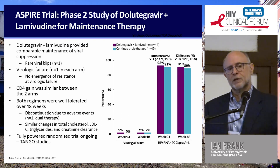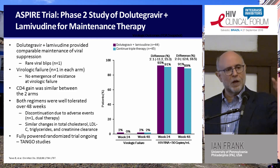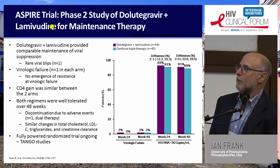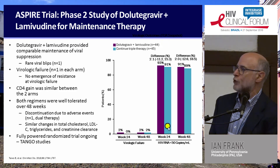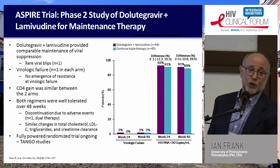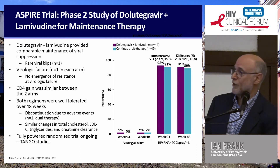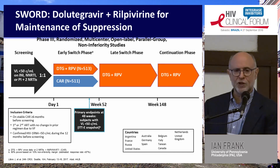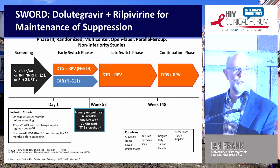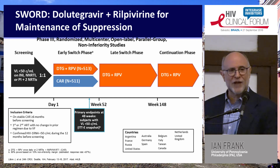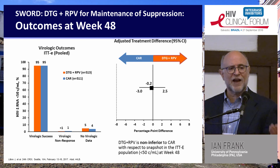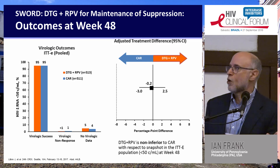More data is coming at CROI about switching from a three-drug combination to dolutegravir-lamivudine. The smaller ASPIRE pilot study — about 45 individuals in each arm — showed over a 48-week period no difference in rates of virologic suppression between continuing three-drug therapy or switching to dolutegravir-lamivudine. The SWORD studies compared continuing three-drug combination therapy in virologically suppressed individuals versus switching to a two-drug combination of dolutegravir-rilpivirine, with absolutely no difference — 95% rate of virologic suppression in both groups.